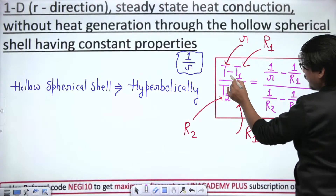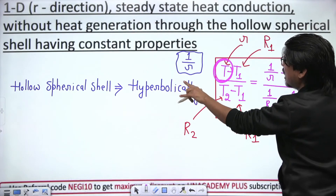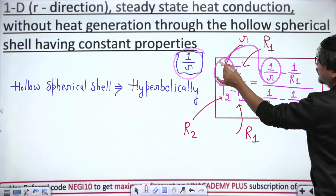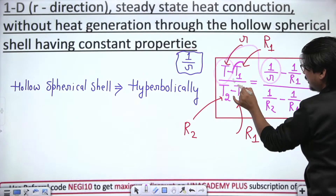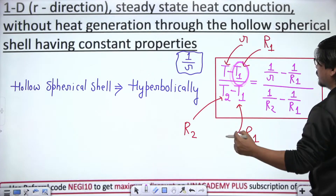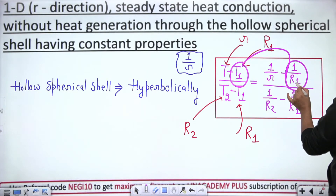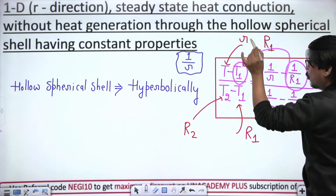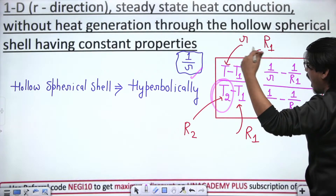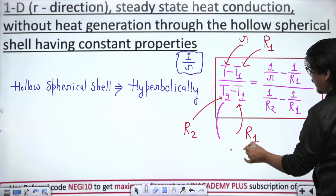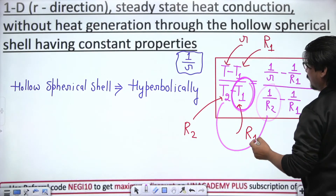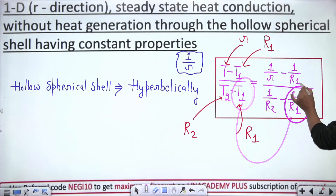For the hollow spherical shell, temperature varies hyperbolically as 1/r. So T corresponds to 1/r; T1 on the inner surface at R1 gives 1/R1; T2 on the outer surface at R2 gives 1/R2; and T1 in the denominator again corresponds to 1/R1. The pattern across all three formulas is consistent — just replace with the appropriate function of position.